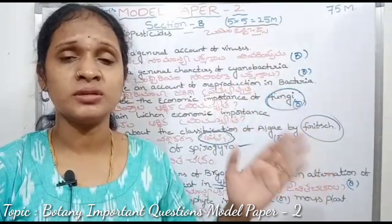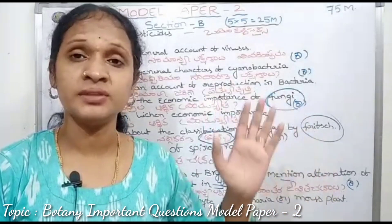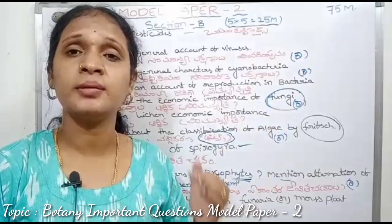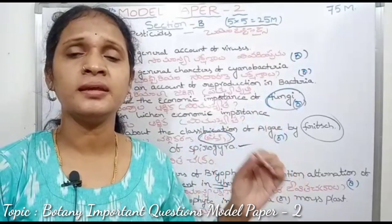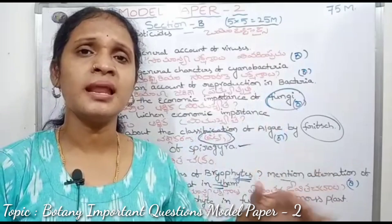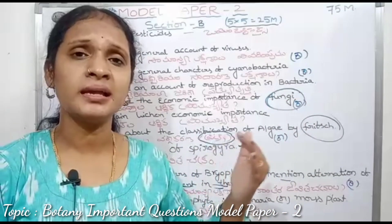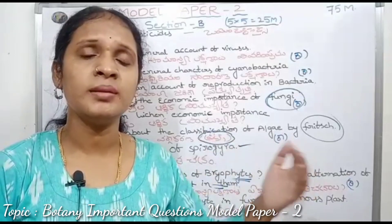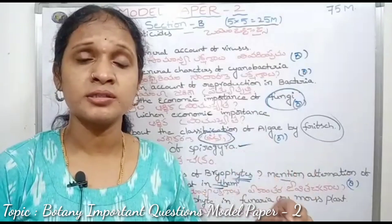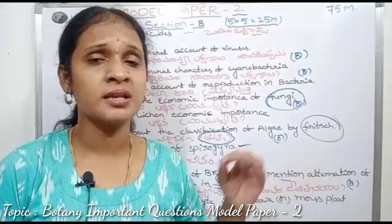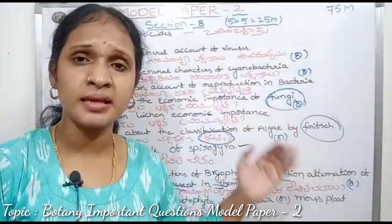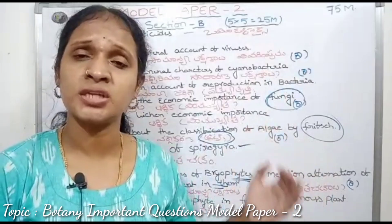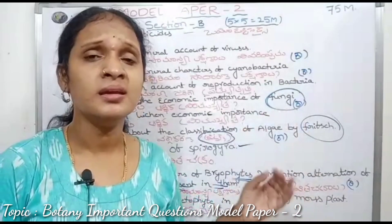For the exam: answer a minimum of S.I. questions, then structure to structure and classification to classification with diagrams. Choose your side headings. For short questions, aim for 7 to 8 points; for 10-mark questions, aim for 10 points; and for 5-mark questions, do 5 to 6 points.